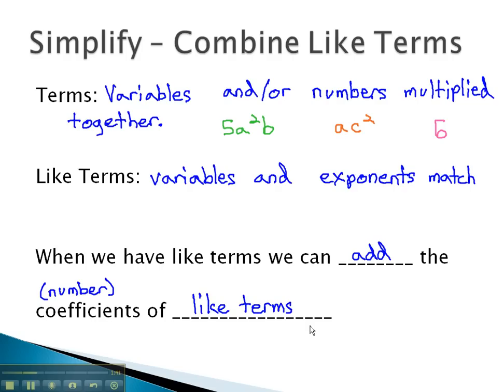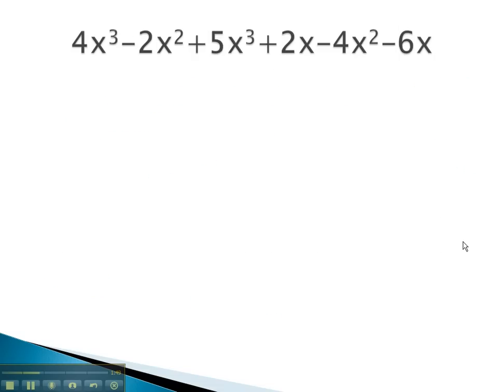Let's look at some examples where we can find like terms and add the coefficients, or numbers, from the like terms. In this expression, we see lots of different types of terms. Notice the terms are separated by either a plus or a minus. Terms are always added and subtracted together.